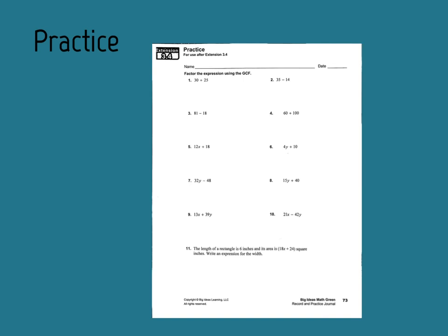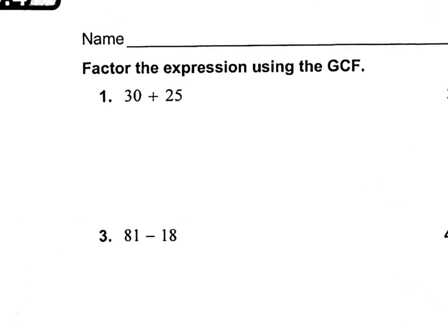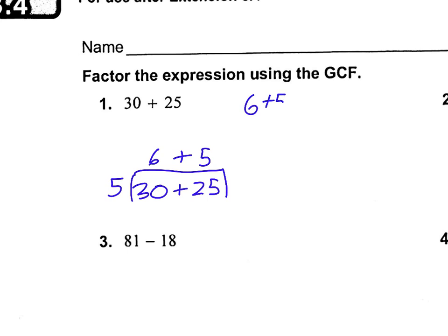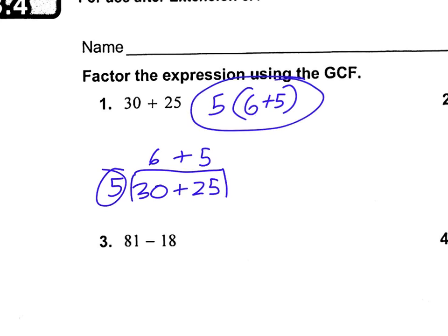Now we're looking at your practice side. We're going to take 30 plus 25 and put it in our cake. What numbers go into 30 and 25? 5 does. 5 goes into 30 six times, and 5 goes into 25 five times. Are there any factors that go into 6 and 5? Nope. So we're done. We bring our 6 plus 5 and put it in parentheses with the 5 on the outside. Our answer is 5 times the quantity 6 plus 5.